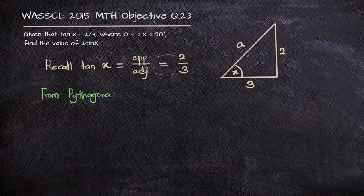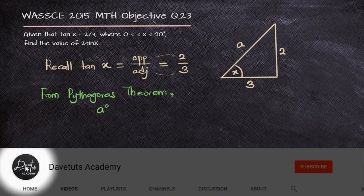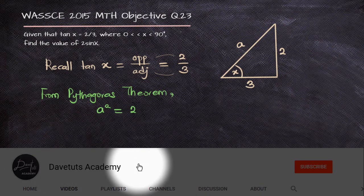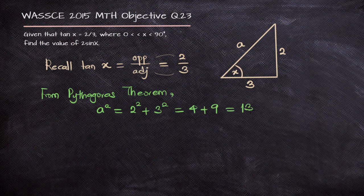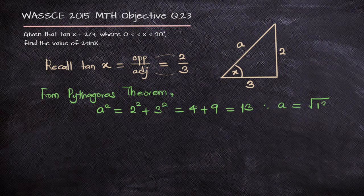From Pythagoras' theorem, we know that from the diagram, a squared will be 2 squared plus 3 squared. And that will be 4 plus 9, which is 13, such that a will be the square root of 13. So we have all the sides of our triangle defined already.